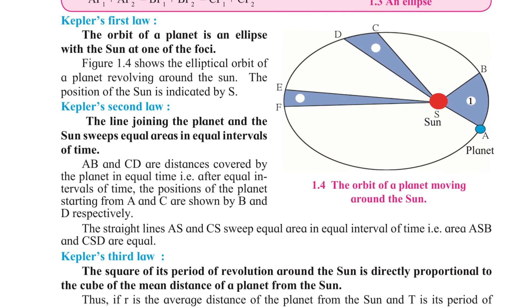Now let's come to Kepler's laws. Kepler's first law: The orbit of a planet is an ellipse with the sun at one of the foci. Figure 1.4 shows the elliptical orbit of a planet revolving around the sun. The position of the sun is indicated by S.